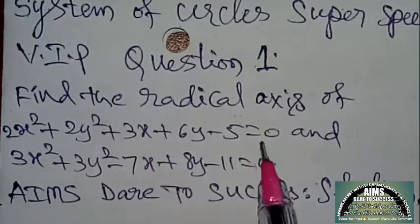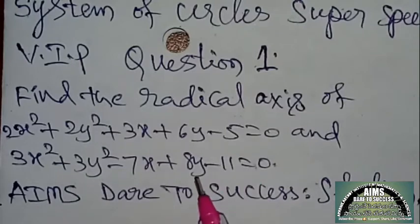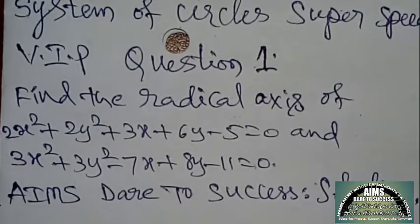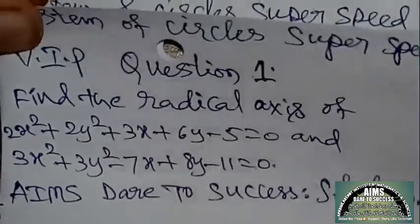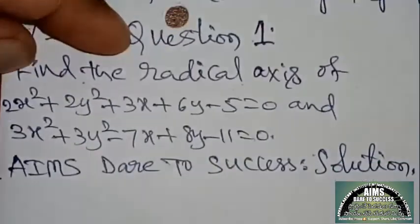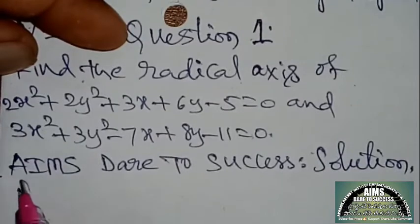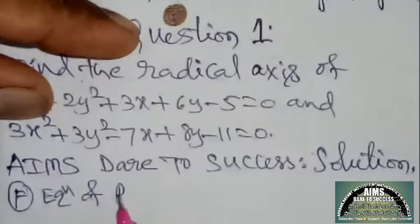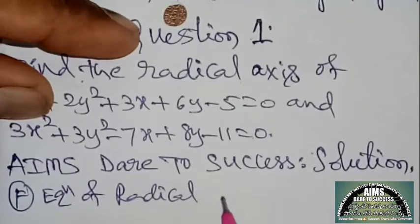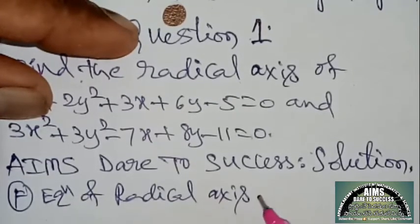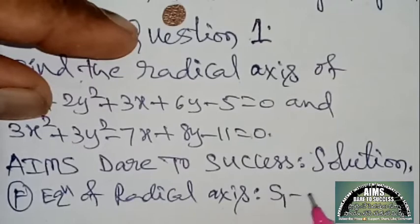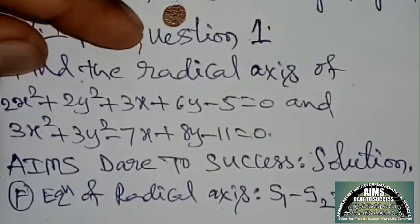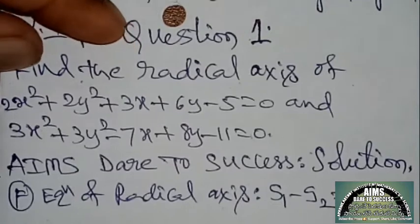Today, these type of questions — equation of radical axis type of questions — I will tell you in one shot. I will tell you the formula: the equation of radical axis, while you are having two circles, is first circle minus second circle equals 0.